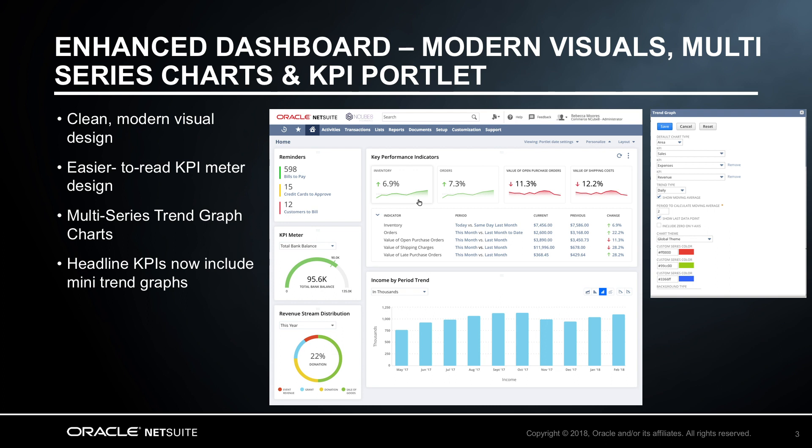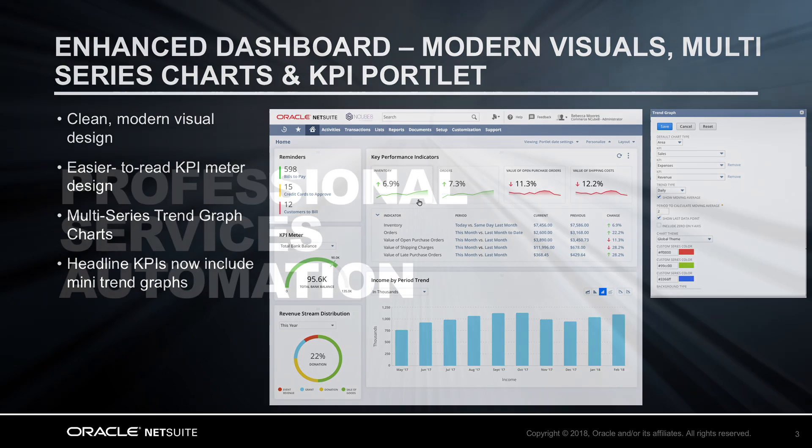You can now display multi-series charts in trend graph portlets, comparing up to three KPIs, both standard and custom. The headline KPIs are more bold and distinct, including a mini-trend graph, enabling you to act quickly on insights. To see the full list of KPIs, you can expand and collapse the list under the headline KPIs.